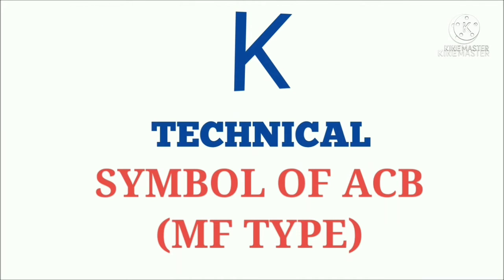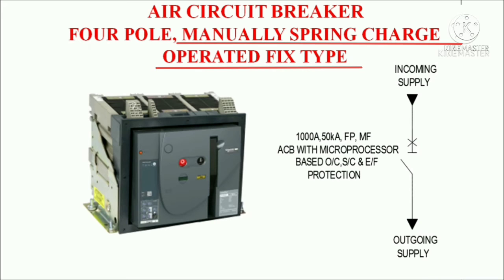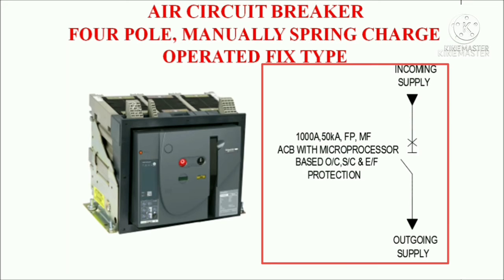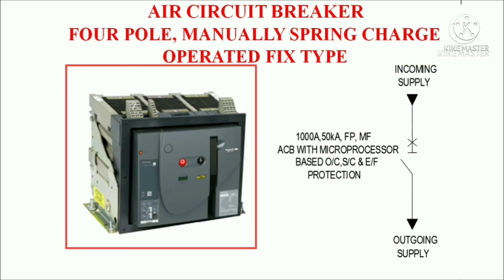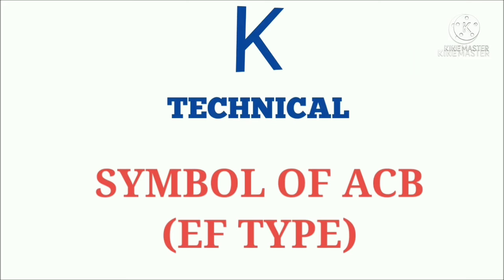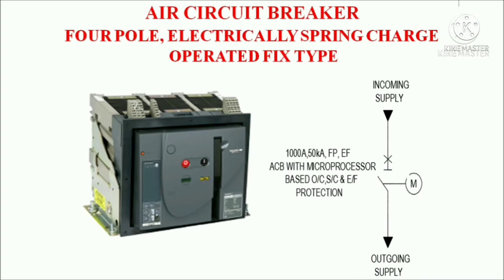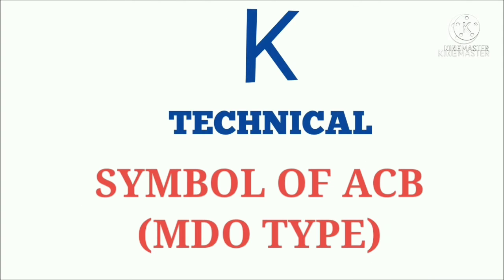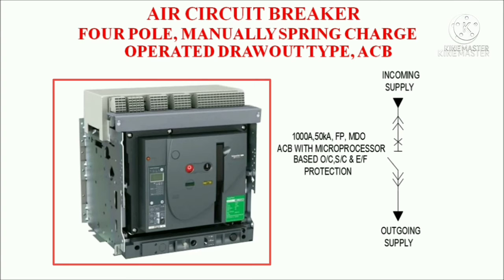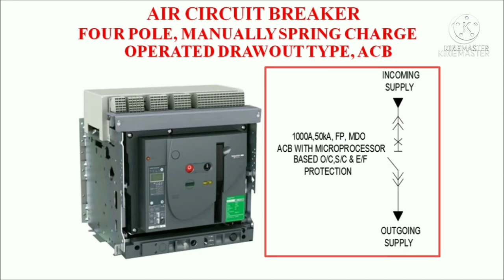Now let's talk about ACB — air circuit breaker. It is MF type. MF stands for manually spring charge operated fixed type. The symbol of MF type ACB is shown here, and the physical appearance of ACB MF type is also shown here. Symbol of ACB EF type and ACB MDO type — the physical appearance of MDO type ACB is shown here, and the symbol is shown here.